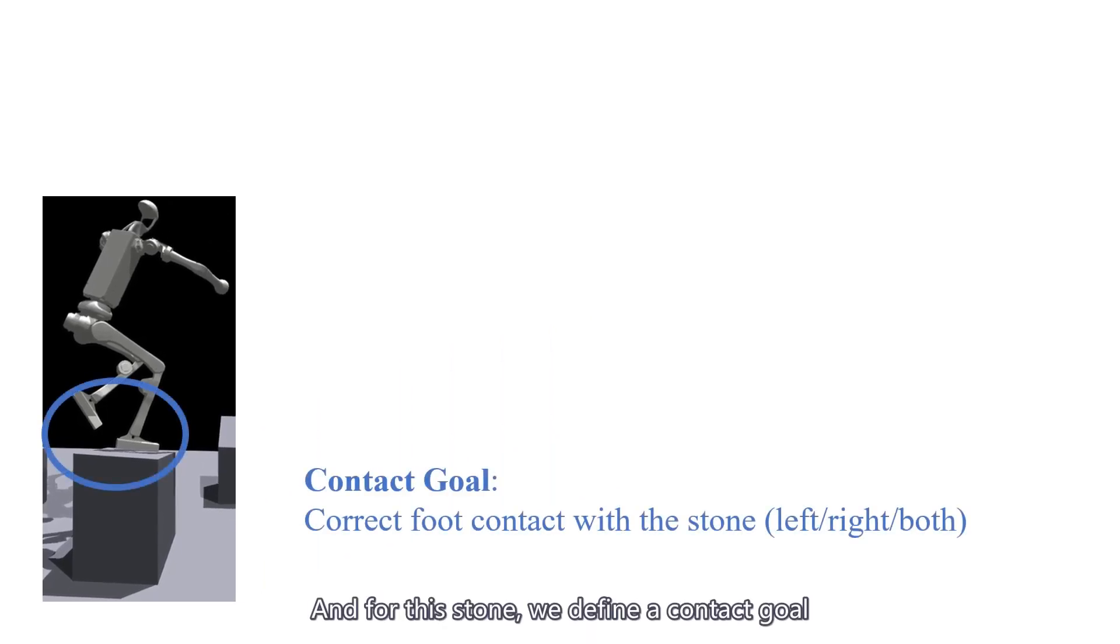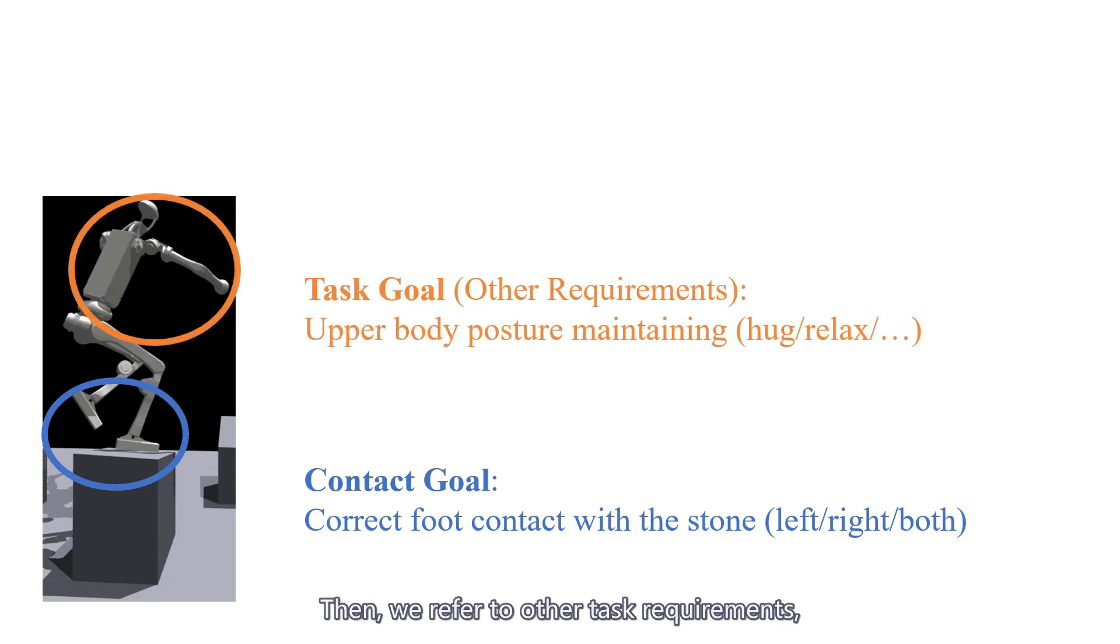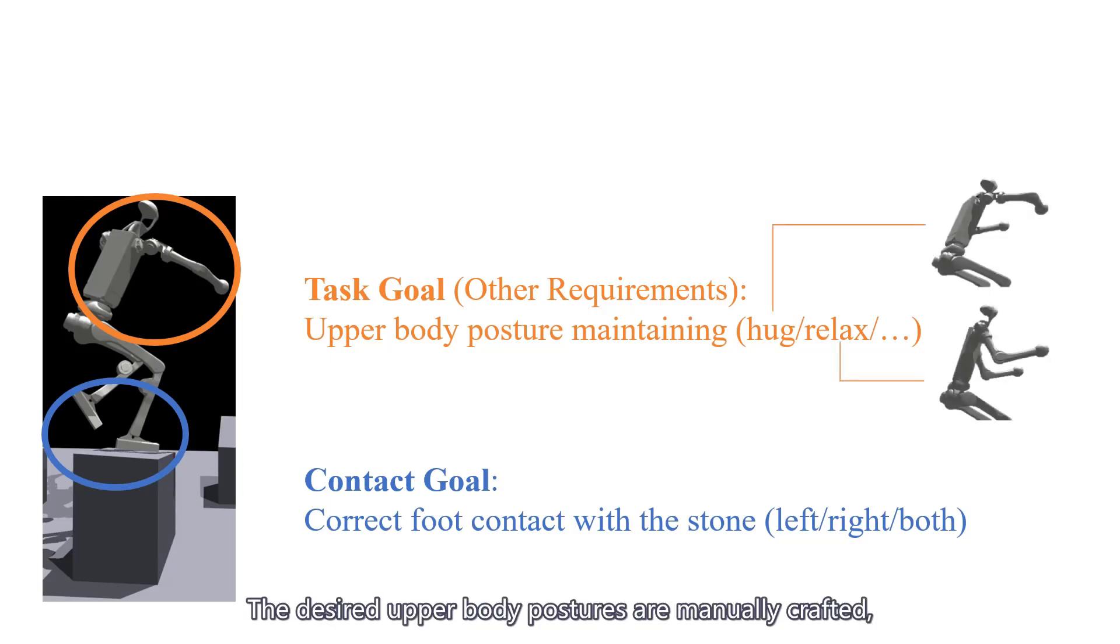And for this stone, we define a contact goal specifying the desired foot contact, then we refer to other task requirements, such as maintaining the upper body posture, as the task goal. The desired upper body postures are manually crafted, including the hug one and the relax one.